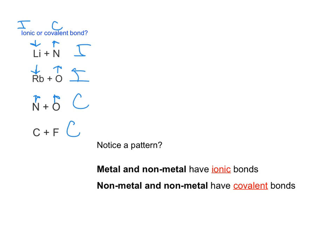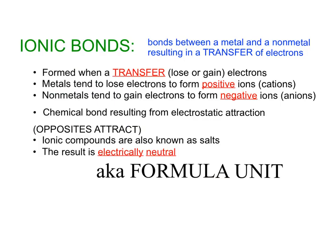There is a pattern here. If you look at the two that are ionic, we've got a metal in those. The ones that are covalent are both nonmetals. So the ones that are ionic are made up of a metal and a nonmetal, and the ones that are covalent are made up of only nonmetals. An ionic bond is going to be between a metal and a nonmetal, which results in a transfer of electrons — one element is really pulling on those electrons while the other one isn't.